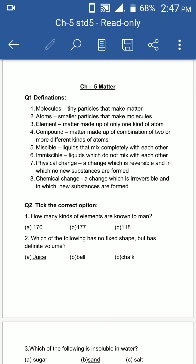Seventh is physical change - a change which is reversible and in which no new substances are formed. Eighth is chemical change - a change which is irreversible and in which new substances are formed. Aise change jo irreversible ho, aur us mein se new substance form hota ho. Here we are completed the definitions.